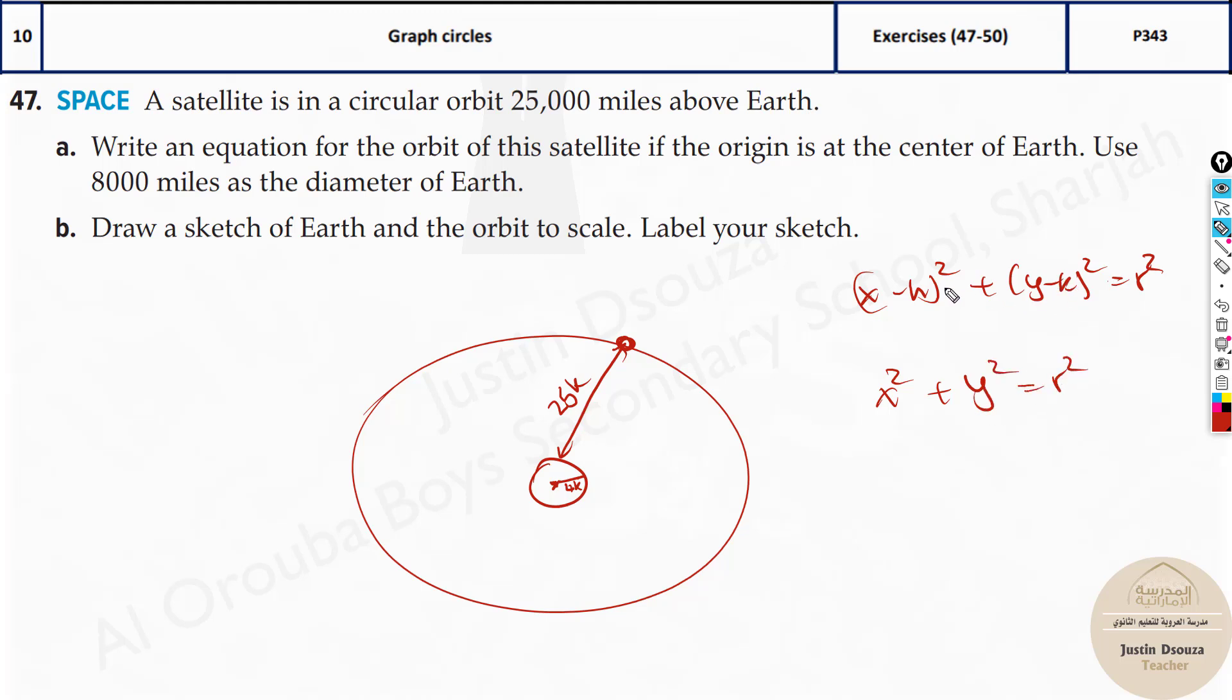If at all there were coordinates given, the origin is at some specific point h and k, then we have to use those points. But over here it's in the origin. So it's just 0 and 0. So we use this equation.